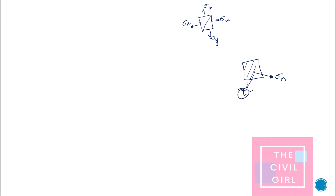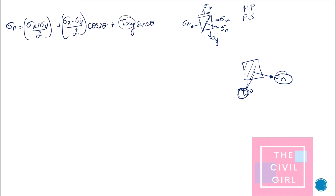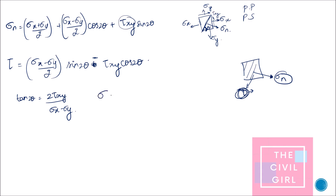The plane where shear stress is zero is called the principal plane, and the corresponding normal stresses are called principal stresses. There may be any number of principal planes in an object. Sigma n is given by a formula involving tau xy, the shear stress acting on the member. The angle of inclination is called theta, and the angle between the normal stress and the plane is called phi, also known as obliquity.